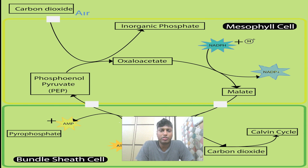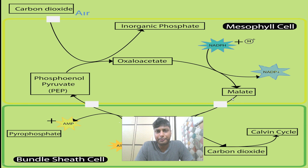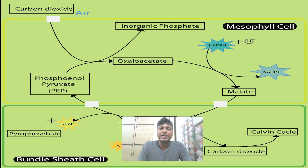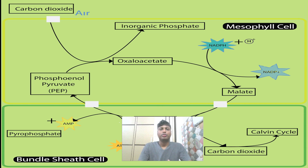In the next step, oxaloacetate undergoes reduction. Reduction means the addition of hydrogen, so oxaloacetate is reduced to form malate. The hydrogen is donated by NADPH₂, which gets converted into NADP⁺ — a simple reduction reaction. With this, the first half of the C4 pathway is complete, and malate is formed in the mesophyll cells.